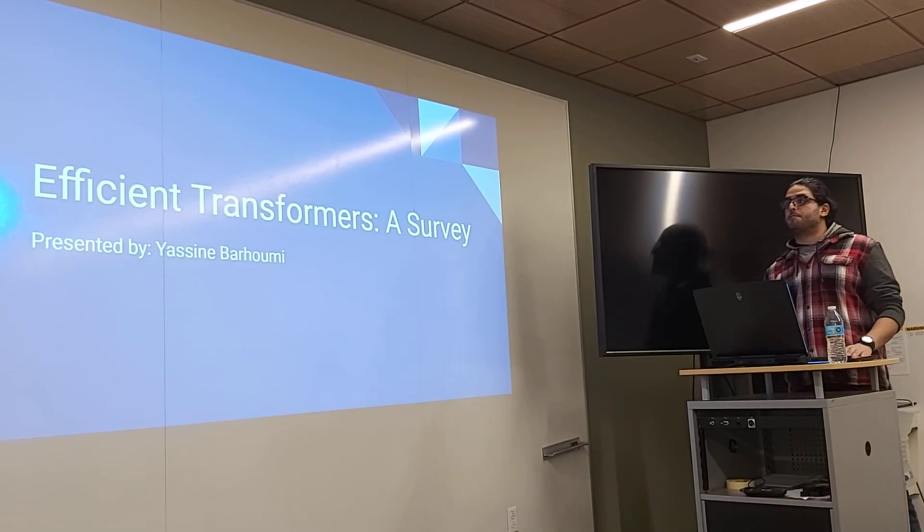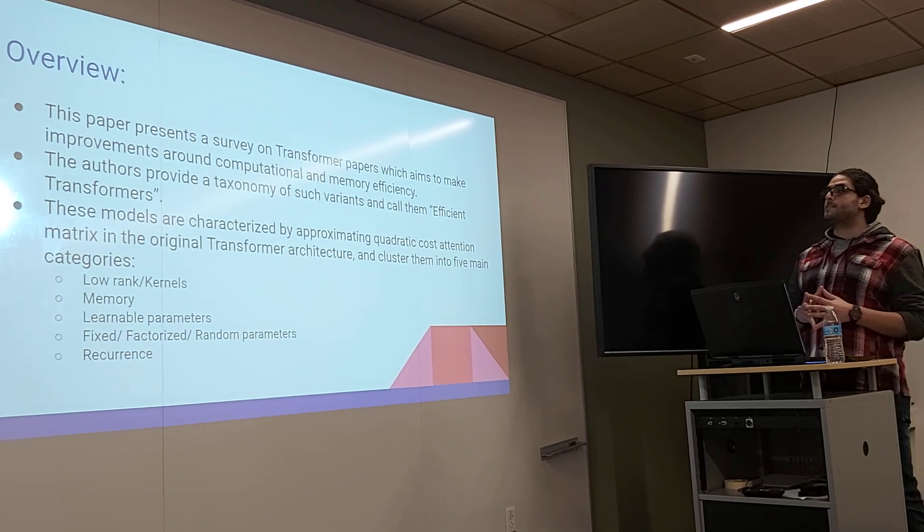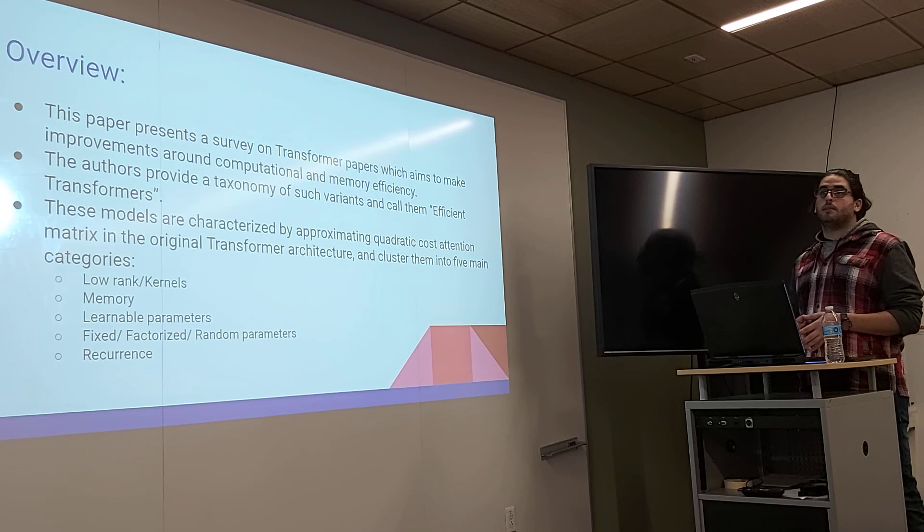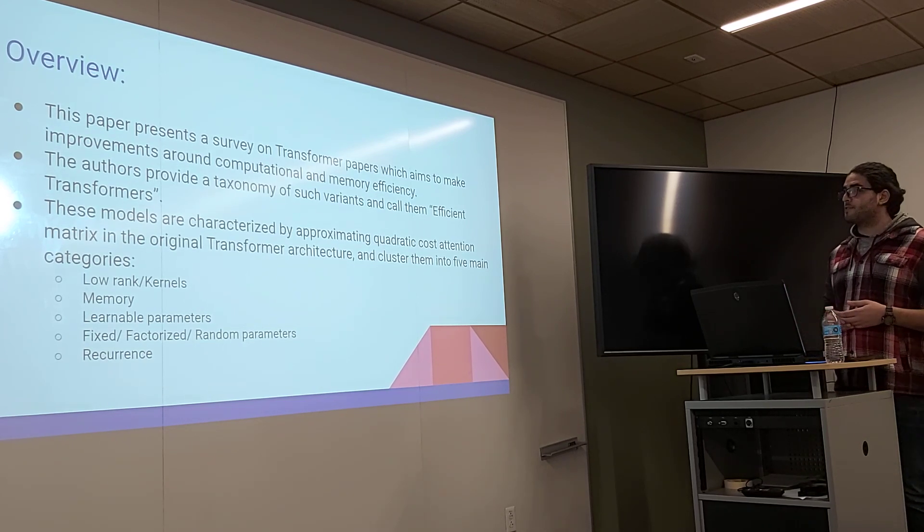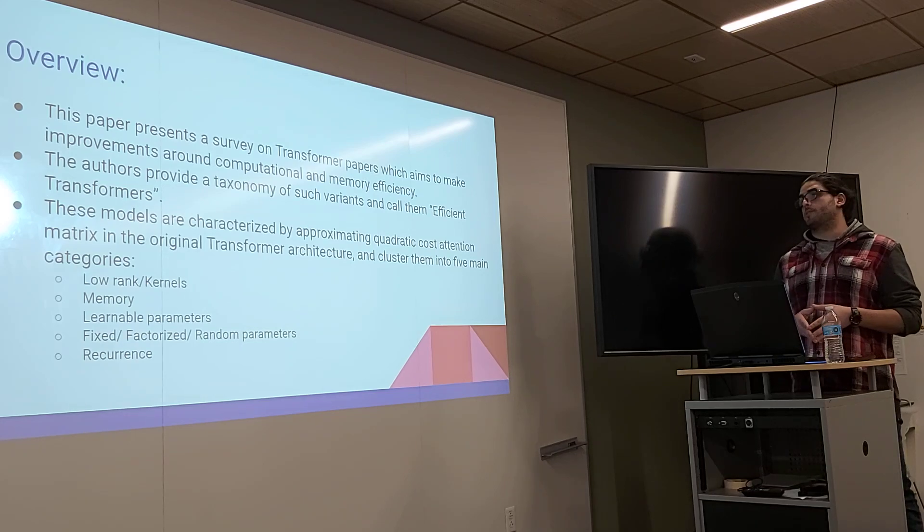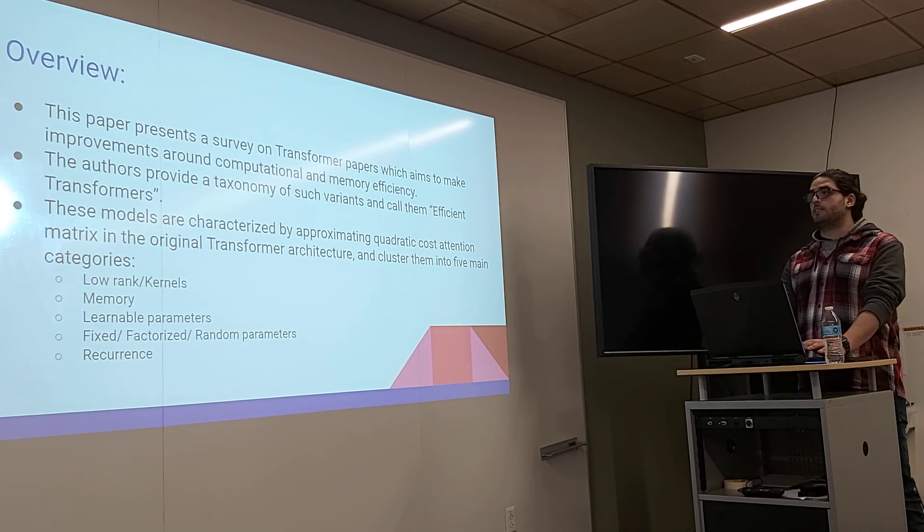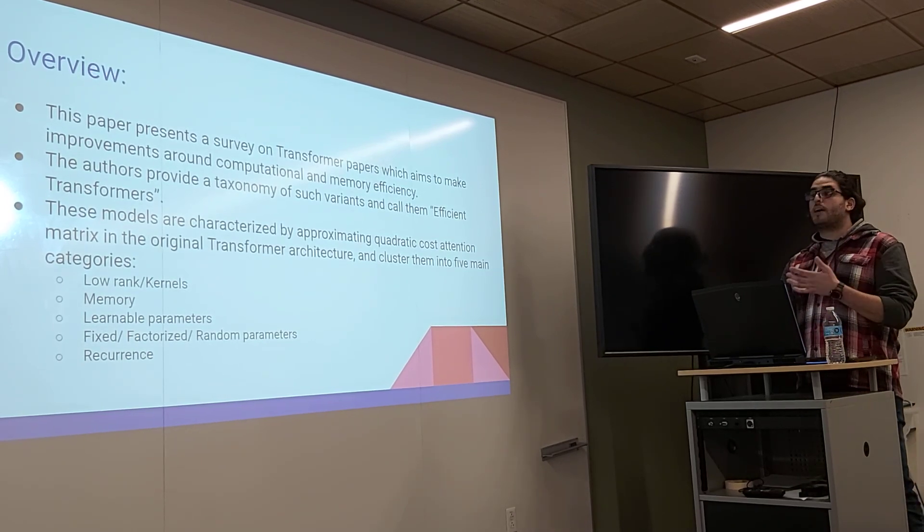Hello and welcome. Today I'm going to present Efficient Transformers by Google. This paper presents a survey on transformer papers which aims to make improvements around computational and memory efficiency. The authors provide the taxonomy of such variants and call them Efficient Transformers. These models are characterized by approximating the quadratic cost attention matrix in the original transformer architecture and cluster them into five main categories.